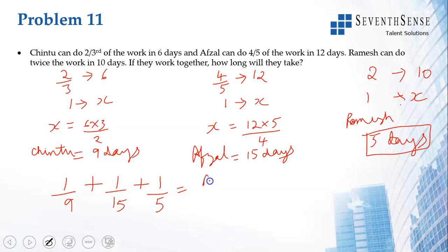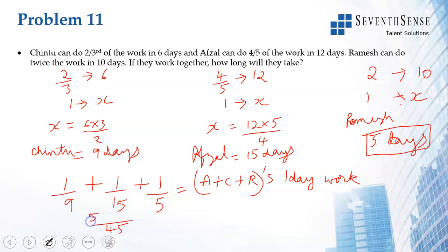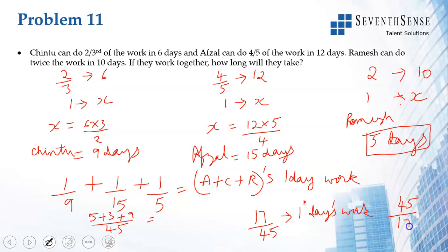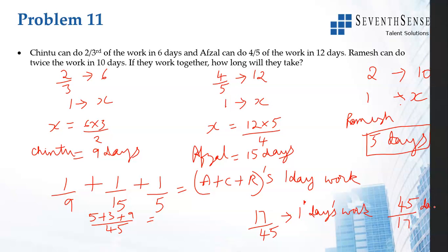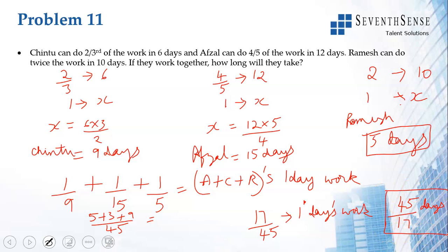The LCM for 9, 15, and 5 is 45. So combined one day's work is 5 plus 3 plus 9 over 45, which equals 17 by 45. The total time taken by all three together will be 45 by 17 days, which as a mixed fraction is 2 and 11 by 17 days.